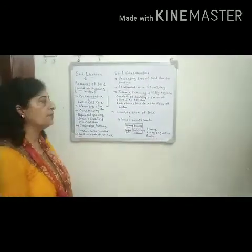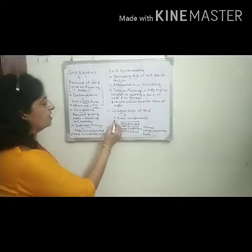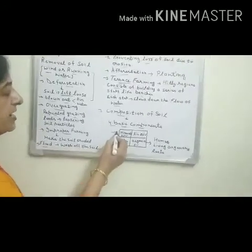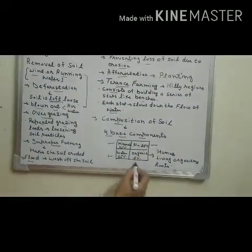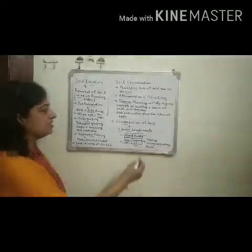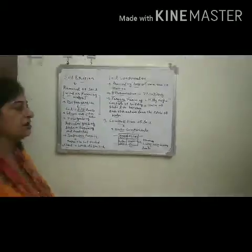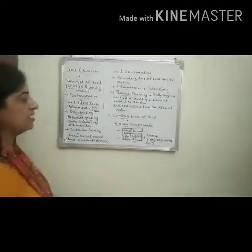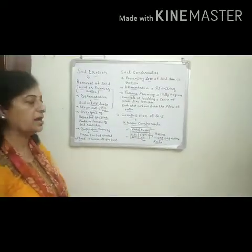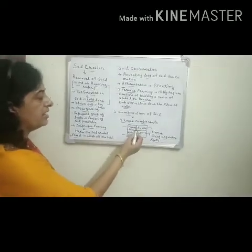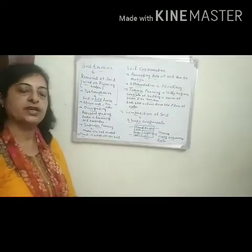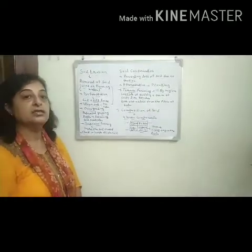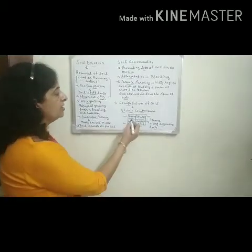The next topic is the composition of soil. Soil is made up of four basic components: inorganic minerals, air, water, and organic materials. Organic materials are further divided into humus, living organisms, and roots. Inorganic materials are present in soil at about 45%, air and water each at about 25%, and organic materials at about 5%.